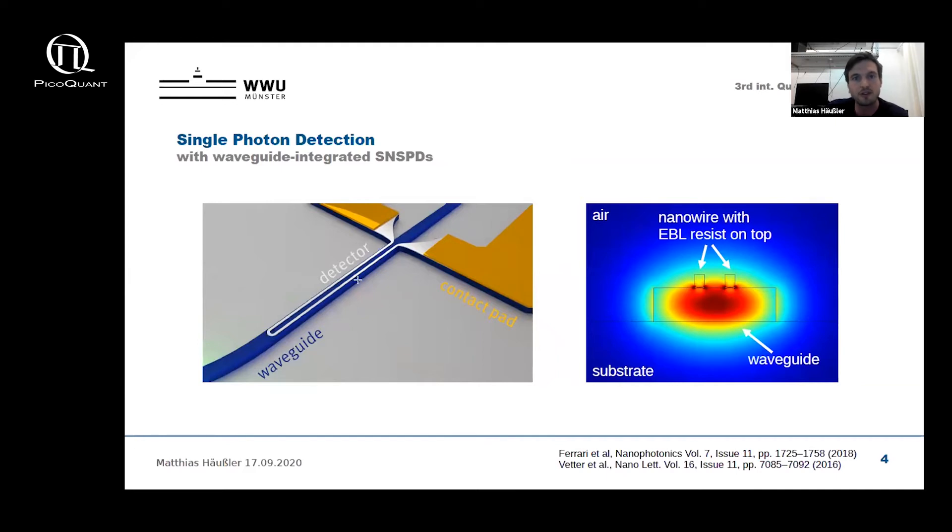Here on the left side you can see a schematic of a waveguide integrated SNSPD. The nanowire, the sensing part of the SNSPD, sits on top of this silicon nitride waveguide. If a photon is now traveling along the waveguide, it is evanescently coupled to the detector, and the detector is then partially brought into the normal conducting state, which can then in the end be sensed with a suitable readout scheme. This absorption of the photon can also be simulated using FEM simulations as you can see here on the right side.